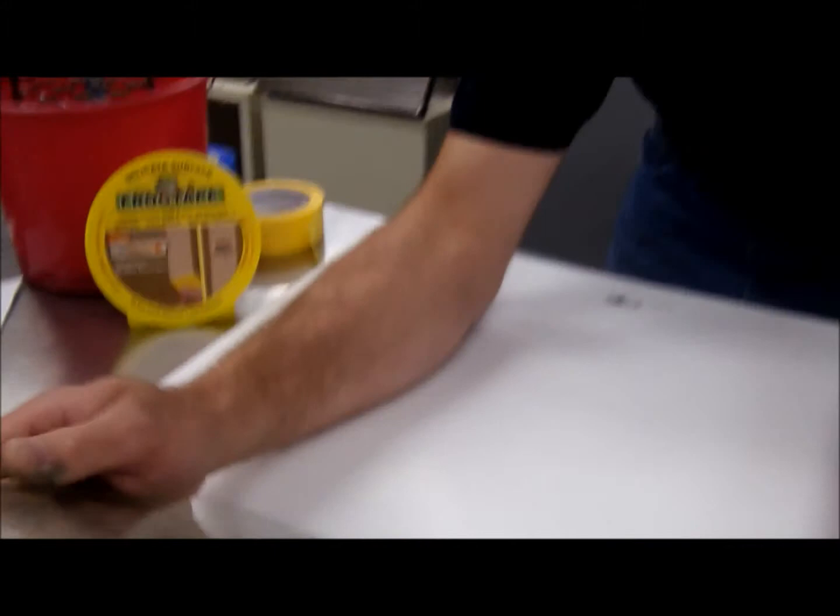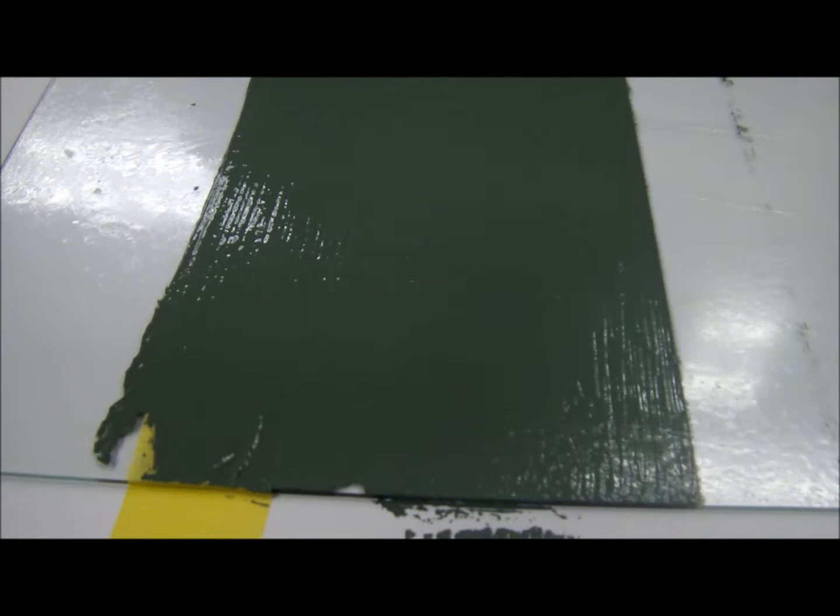When I take it off, you'll see how yucky the 3M edge looks and how sharp the frog tape edge looks. It's not that the 3M tape's bad tape. It just doesn't have that same edge lock material in it. Paint block, they call it. That's their proprietary name.